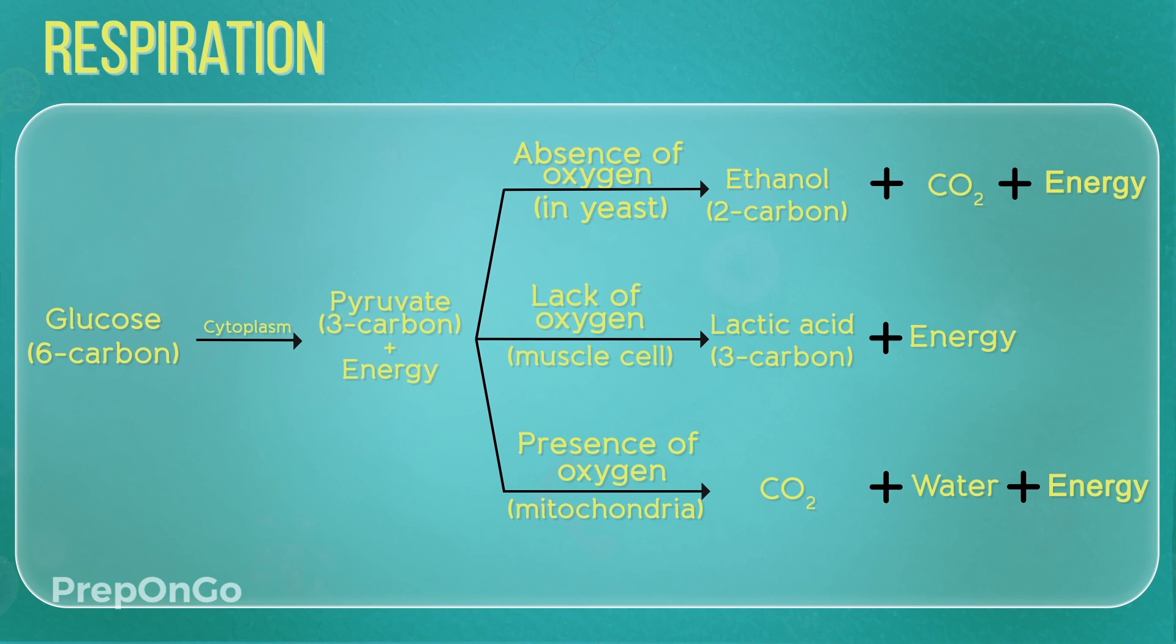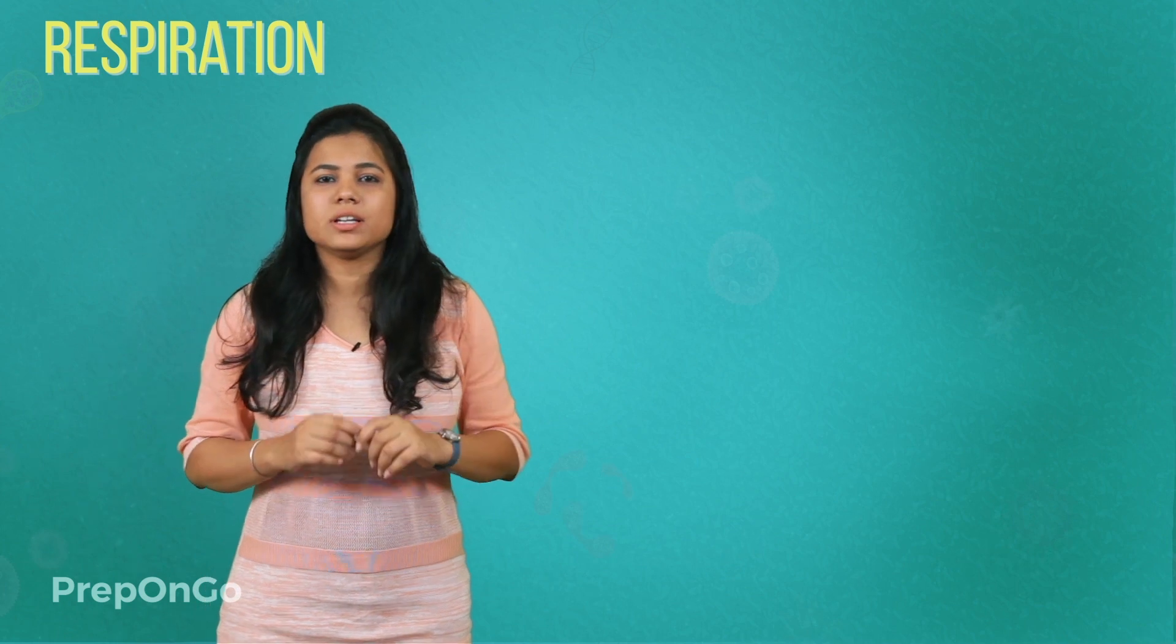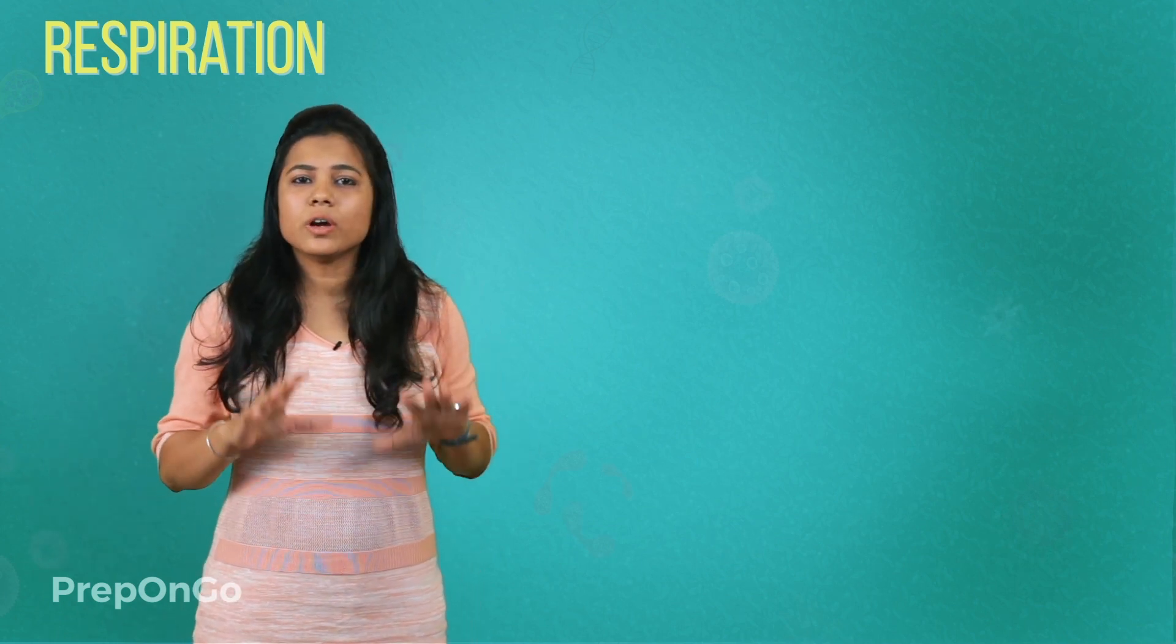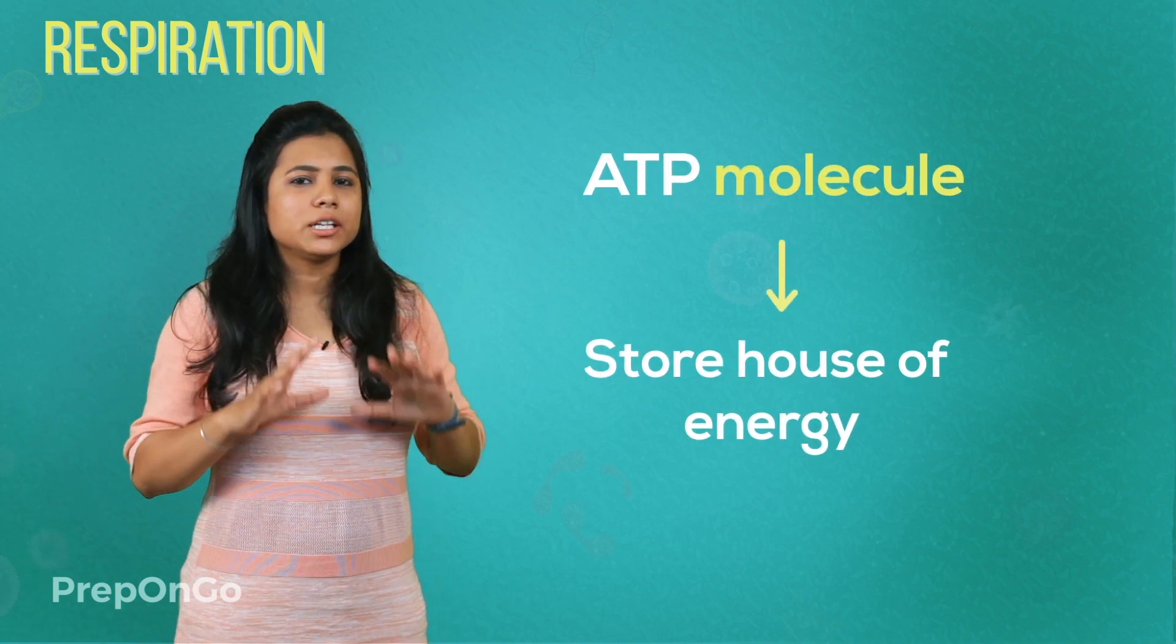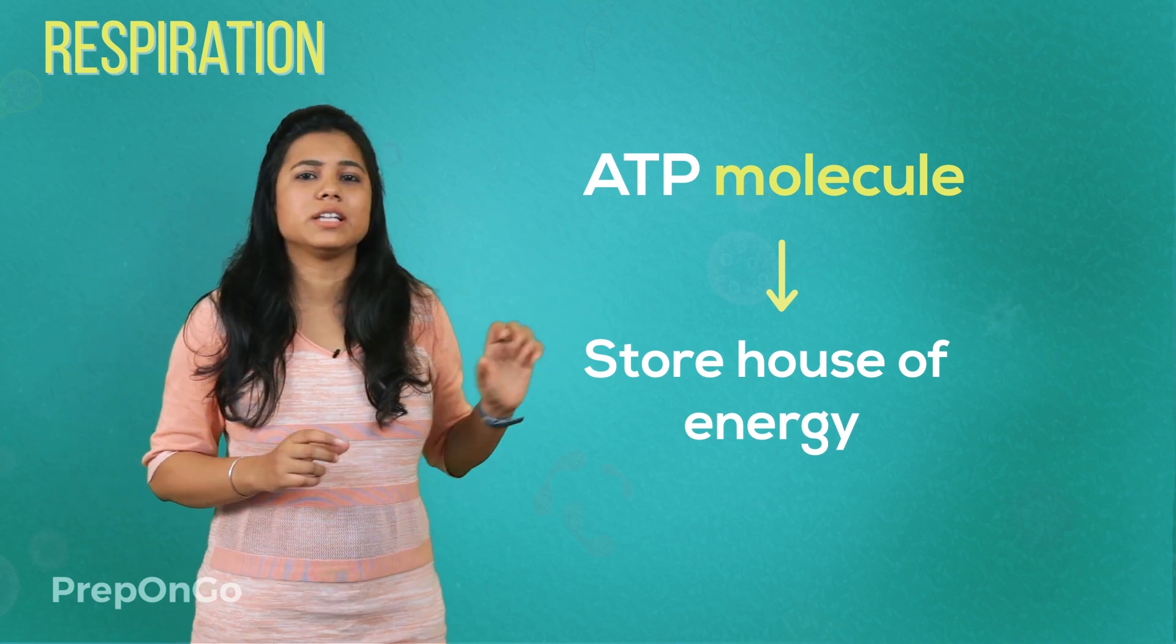Now the energy is utilized by the cell but the whole energy which is produced in the whole process is not consumed at a single time. A molecule called ATP is synthesized by this energy which is produced. Now ATP is a storehouse of energy. It breaks down whenever or wherever the body parts need this energy.